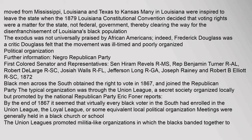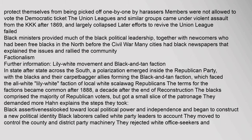The Union Leagues promoted militia-like organizations in which blacks banded together to protect themselves from harassers. Members were not allowed to vote the Democratic ticket. The Union Leagues and similar groups came under violent assault from the KKK after 1869 and largely collapsed. Black ministers provided much of the black political leadership, together with newcomers who had been free blacks in the North before the Civil War. Many cities had black newspapers that explained the issues and rallied the community.